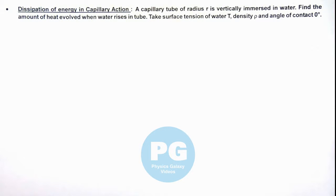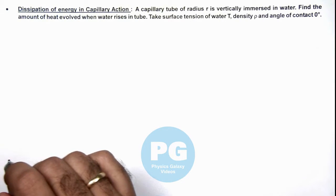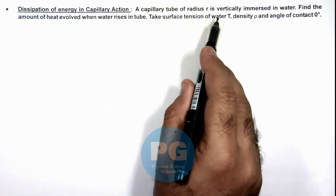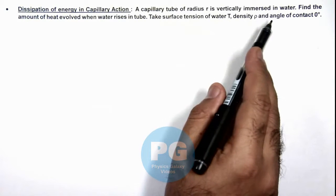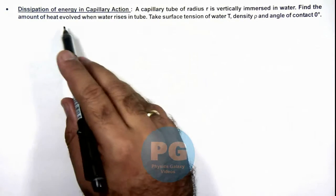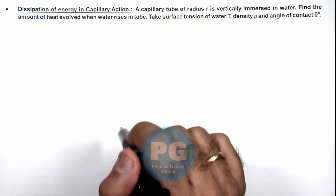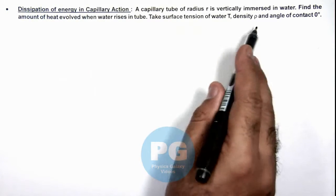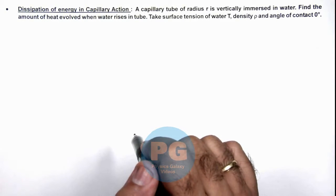In this illustration, we'll study about dissipation of energy in capillary action. We are given that a capillary tube of radius r is vertically immersed in water, and we are required to find the amount of heat evolved when water rises in the tube. We are given the surface tension, density, and angle of contact of water with the capillary.